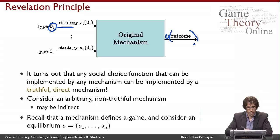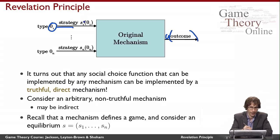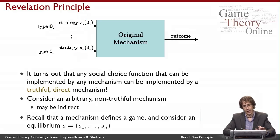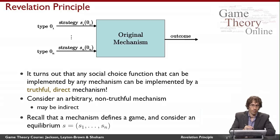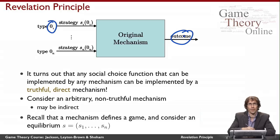We can look at this whole thing as a game — it's just a mapping from agents' types and strategies into some outcome that the agents have utility for. We can think about an equilibrium of this game, with all strategies S in equilibrium with each other. When I say that a mechanism implements a social choice function, I mean that in equilibrium, the mapping from types to outcomes is the same as the mapping that would be chosen by the social choice function.